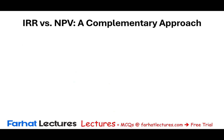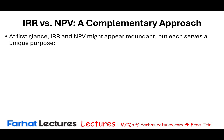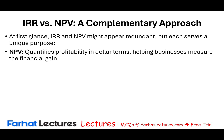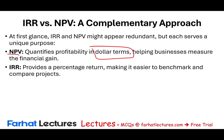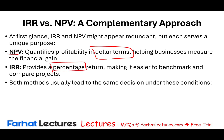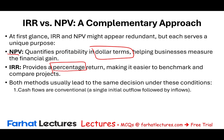IRR versus NPV. Initially they may appear the same, but each serves a unique purpose. NPV looks at dollars; IRR looks at a percentage. Both usually lead to the same decision when cash flows are conventional — meaning a single outflow followed by inflows — and when projects are independent, meaning accepting one does not impact the other.